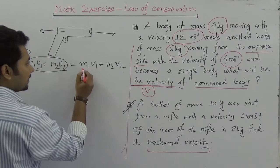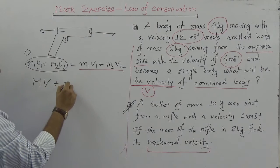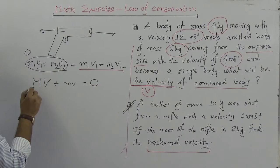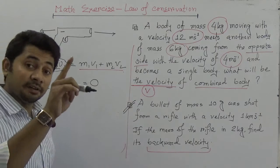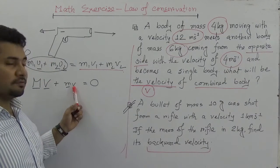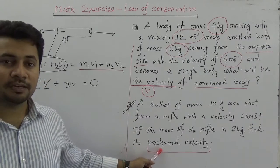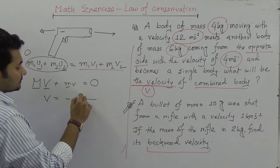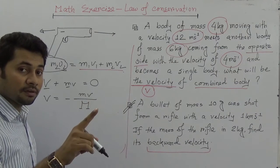So we can write MV plus mv equals zero, where capital M is the mass of the gun, capital V is the velocity of the gun, small m is the mass of the bullet, and small v is the velocity of the bullet. We are asked to find the backward velocity of the gun, so: V equals minus mv over M. Now we need to know how to use this data — the mass is given as 10 grams, and we cannot use grams in these calculations, so we must convert to kilograms.